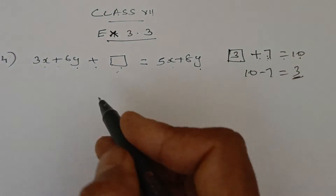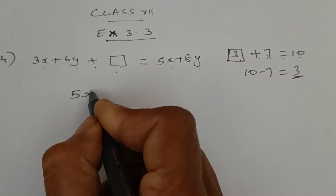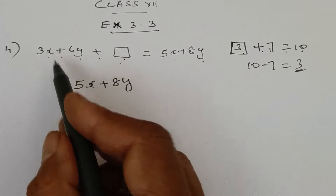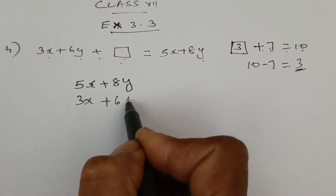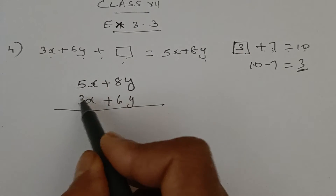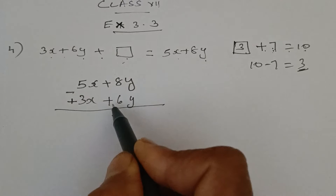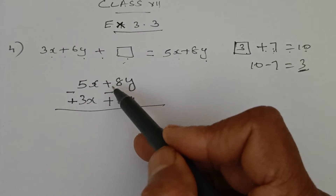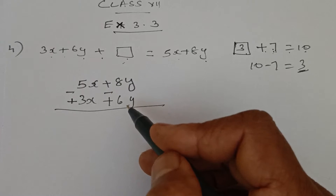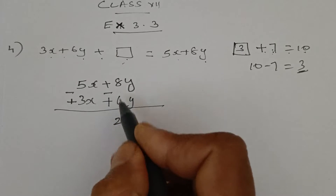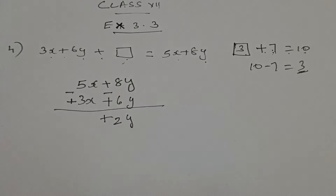So the answer is: (5x + 8y) minus (3x + 6y). The rule of subtraction says we change the sign of the second expression, so plus 3x becomes minus 3x and plus 6y becomes minus 6y. Now we follow the rule of addition of integers: 8y minus 6y — signs are different, so subtract and put the sign of the greater number. 8 minus 6 is 2, sign is plus, giving 2y.